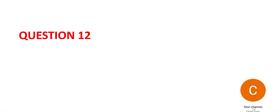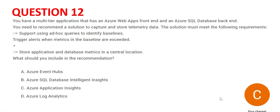Let's look at Question 12. The question is straightforward: they have an application with front end and back end, and they want to store telemetry data, monitor it, trigger alerts, and store database metrics in a central location. The thumb rule clearly says use Log Analytics because it is used to analyze logs — whether it's a web app front end or SQL database backend — and you can use it to see if a baseline is exceeded and fire ad hoc queries to identify baselines.